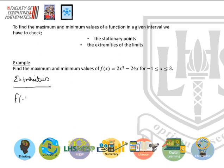Firstly, f of minus 1, that's going to be 2 times minus 1 cubed, minus 24 times minus 1. So that's negative 2 plus 24, so the y value at minus 1 is 22.